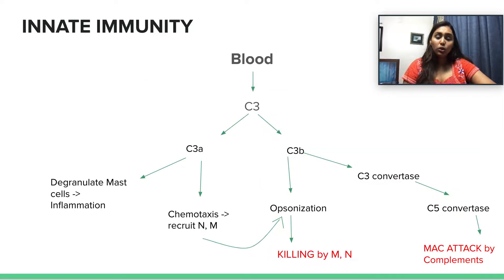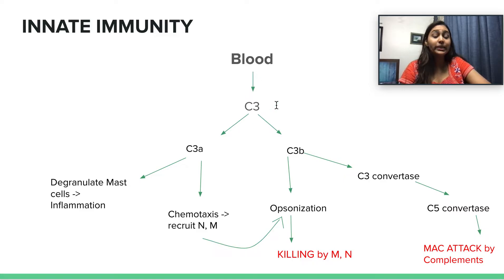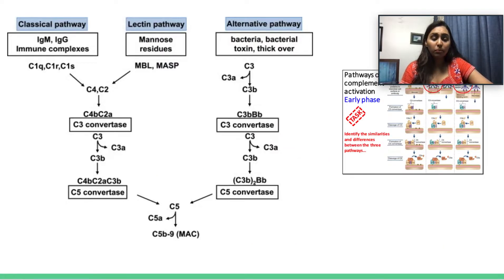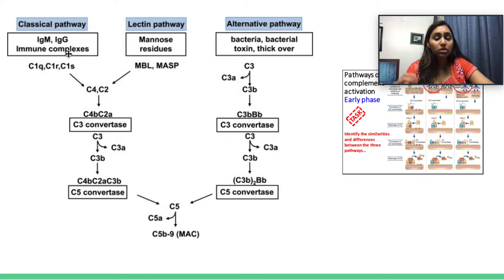Moving on, we're going to see a big overview of the innate immune system. The front-line warriors we use in innate immunity are complements, and the big one to remember is C3. Complements are present in the blood — they can be activated and cleaved. Remember that there are three different pathways to turn on complements: the alternative pathway, the lectin pathway, and the classical pathway.